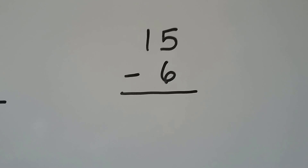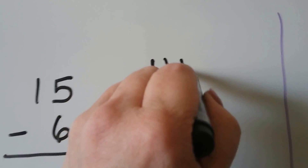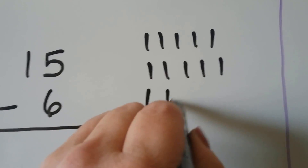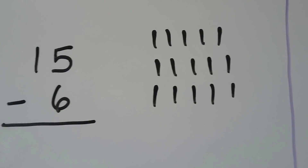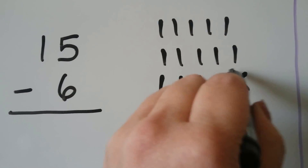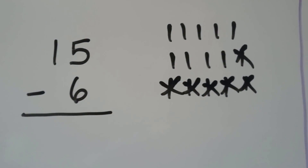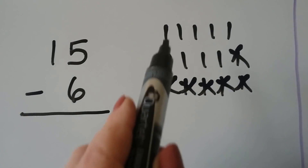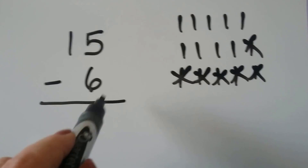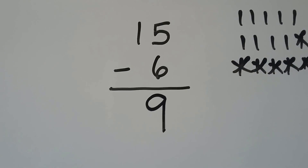15 minus 6. We can make 15 counters: 1, 2, 3, 4, 5, 6, 7, 8, 9, 10, 11, 12, 13, 14, 15. And we can cross off 6 of them. How many are left? 1, 2, 3, 4, 5, 6, 7, 8, 9. 15 minus 6 is equal to 9.